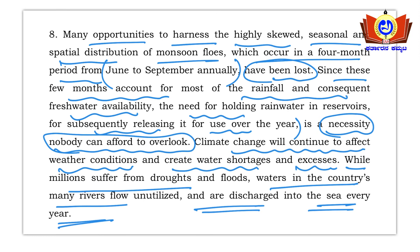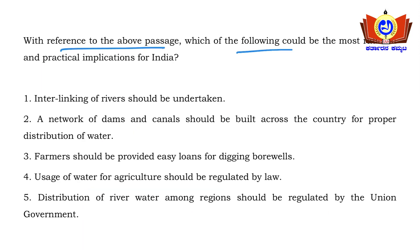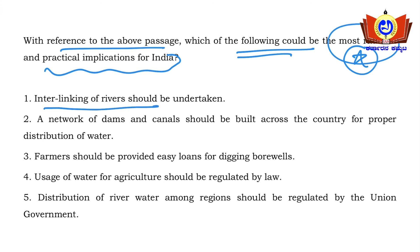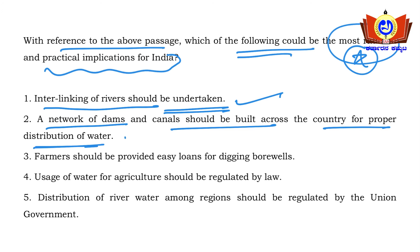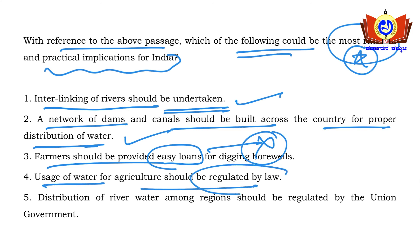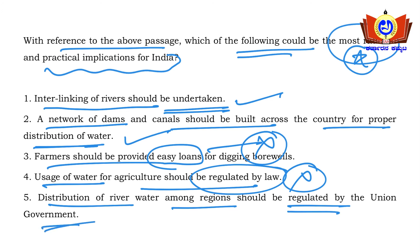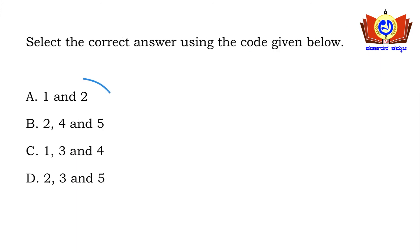Question: With reference to the passage, which could be the most rational and practical implication for India? Options include interlinking rivers and building a network of dams and canals — both are practical solutions from the passage context. Farmers getting loans and water-use regulation by law are not mentioned. So option A — both interlinking rivers and building dams/canals — is the right answer.